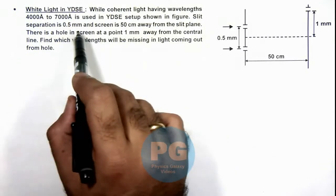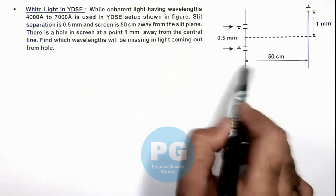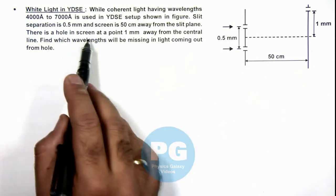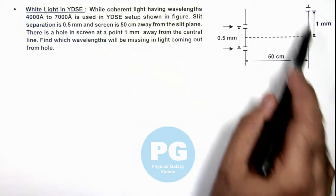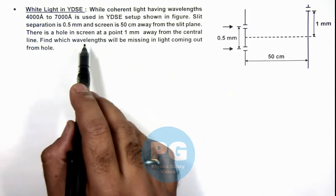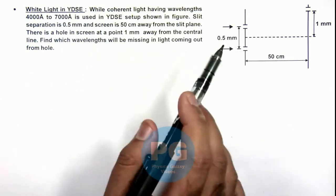The slit separation is 0.5 mm and screen is 50 centimeter away. We are given that there is a hole in screen at a point 1 mm away from the central line. We are required to find which wavelengths will be missing in the light coming out from the hole.